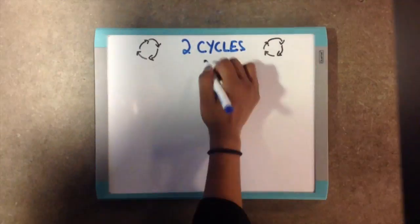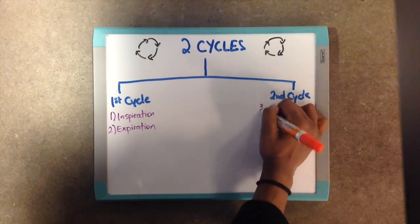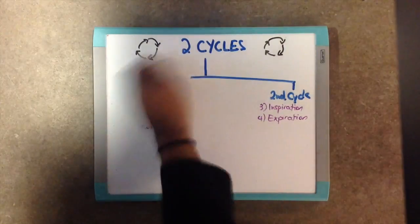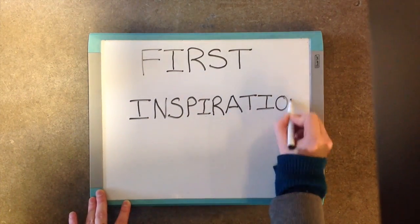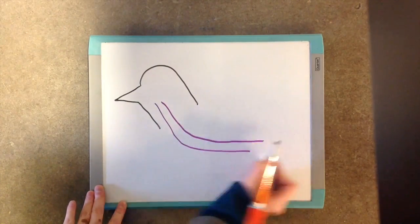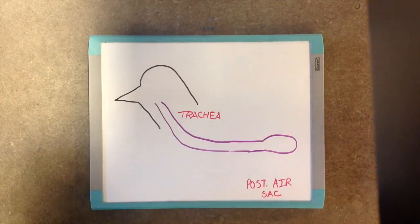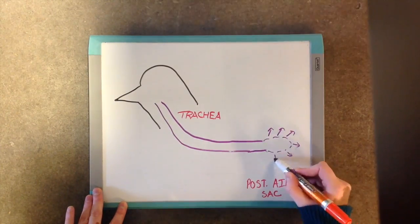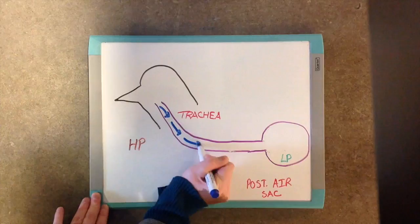This process occurs in two cycles of inspiration and expiration. During first inspiration, certain chest muscles cause the posterior air sacs to expand, creating an area of lower pressure that sucks in air from outside.